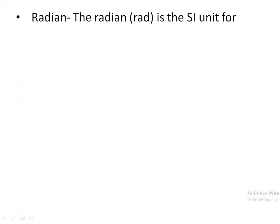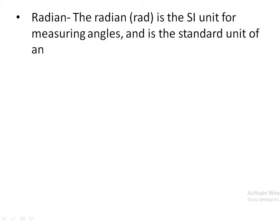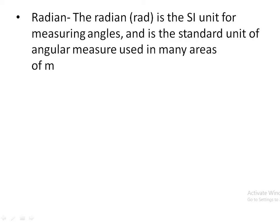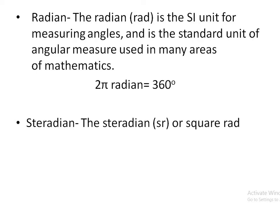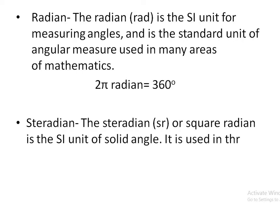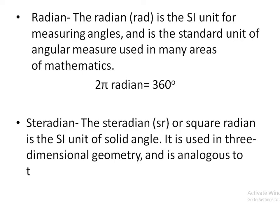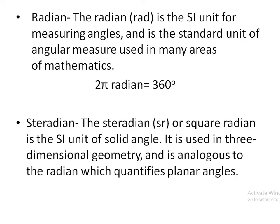The two supplementary units are radian and steradian. The radian (symbol: rad) is the SI unit for measuring angles and is the standard unit of angular measure used in many areas of mathematics — for example, 2π radians equals 360 degrees. The steradian (symbol: sr), or square radian, is the SI unit of solid angle used in three-dimensional geometry. Radian is used for planar angles and steradian for solid angles.